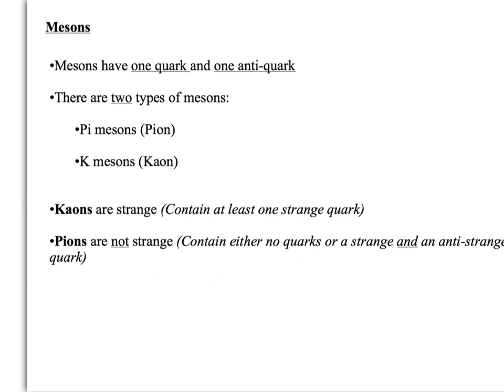So the other type of hadron are the mesons. And these are different because they have one quark and one antiquark. So it's not enough to say they have two quarks. That's not correct. The correct definition of a meson is that something that contains one quark and one antiquark.